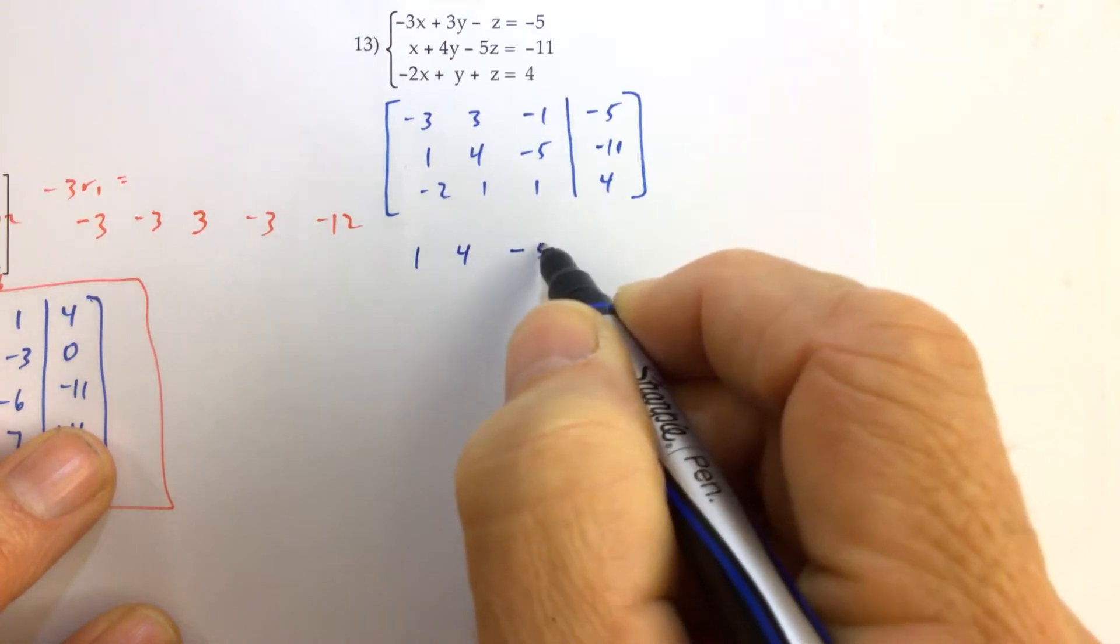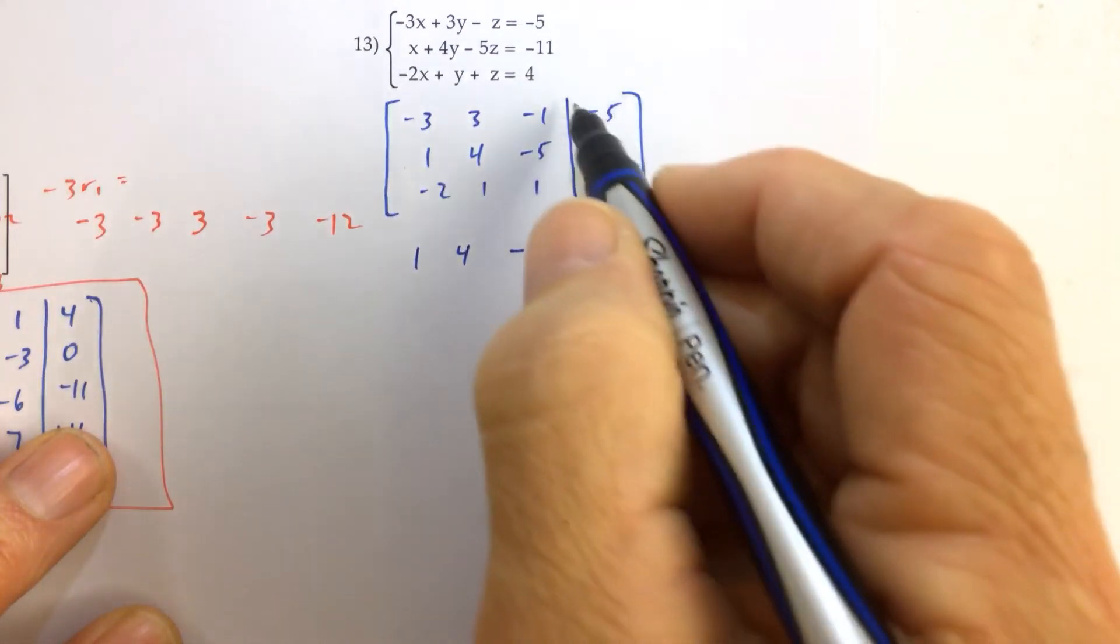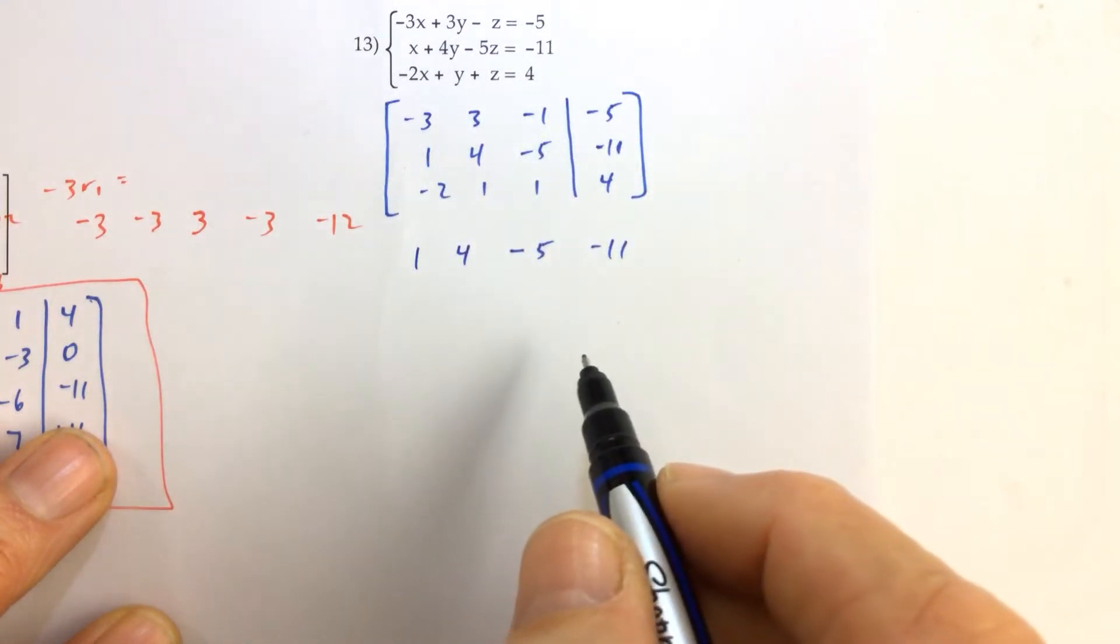One, four, and negative five there. And then we have negative eleven. I'm not even going to write the brackets and I'm not going to write the vertical line because that's extra time.